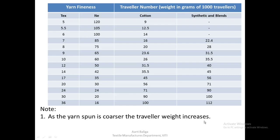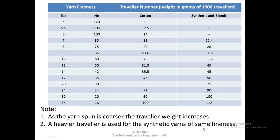Another observation: when comparing synthetic and blends with cotton, for the same 30 tex yarn, cotton uses a traveler number of 90 (weight in grams of 1000 travelers), while synthetic and blends use traveler number 100. As mentioned earlier, a heavier traveler is preferred for synthetics because it helps in better heat dissipation. So a heavier traveler is used for synthetic yarns of the same fineness.